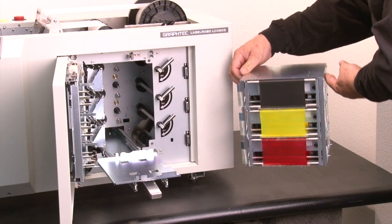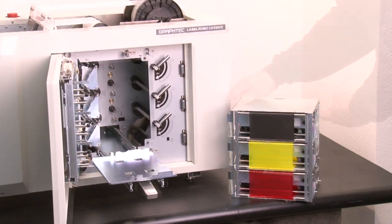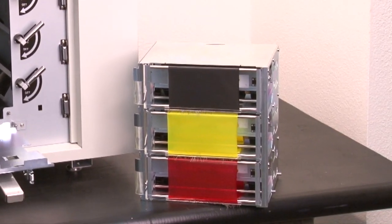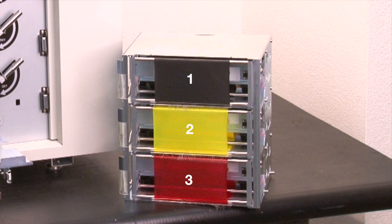The Graftek LCX603 doesn't limit you to just one spot color either. It allows for two other spot color ribbons, totaling three ribbon colors that can be used for creating multiple color labels. Simply load the colors that you need and start printing.